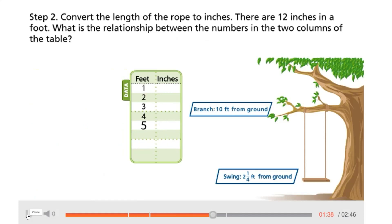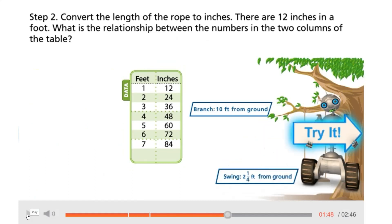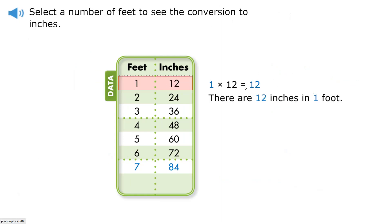Step 2: Convert the length of the rope to inches. There are twelve inches in a foot. What is the relationship between the numbers in the two columns of the table? Select a number of feet to see the conversion to inches. One times twelve equals twelve. There are twelve inches in one foot.